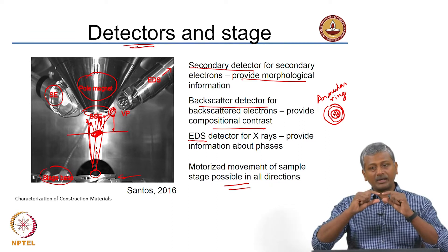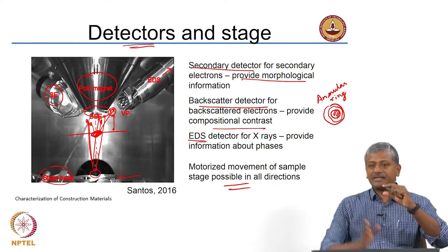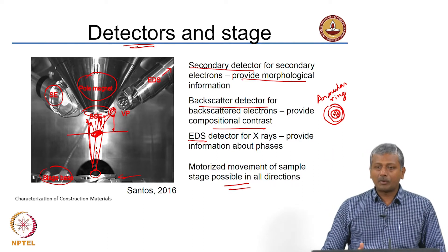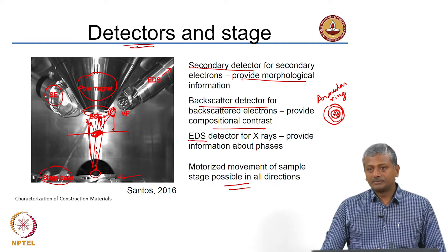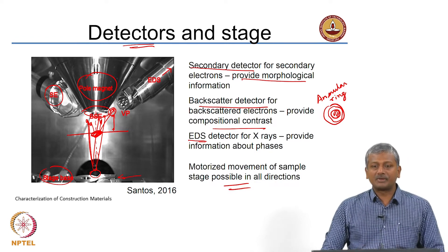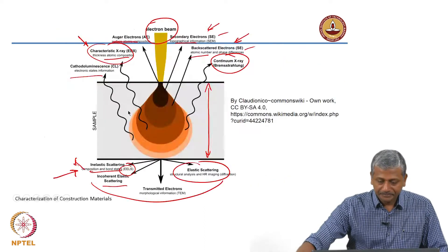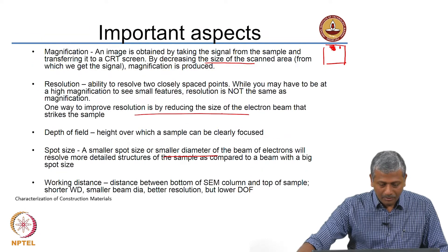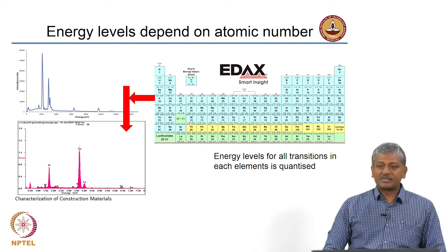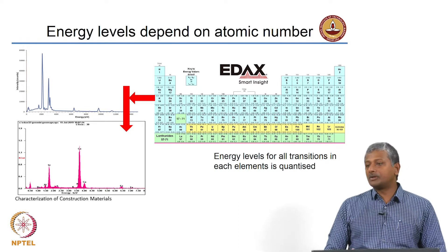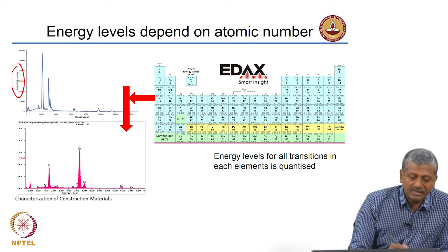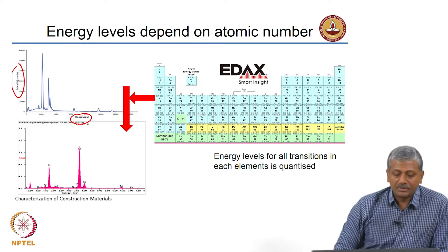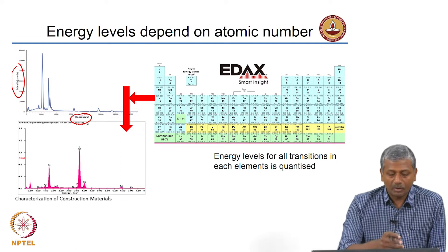The blocking problem occurs because you are working at a low working distance. If the working distance is large, X-rays can travel easily to the X-ray detector without blockage. But to generate a large number of X-rays you need to reduce the working distance — so there is an inherent trade-off. Energy levels depend on the atomic number, and you get a plot of intensity (number of X-rays collected) versus energy in electron volts.